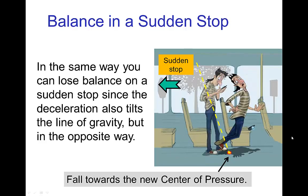A similar case happens if the bus is moving at constant speed but then suddenly stops. This deceleration causes the line of gravity to tilt in the opposite direction. The new center of pressure is again outside of the character's base of support, and the character is thus out of balance due to this sudden stop of the bus and falls towards the center of pressure.